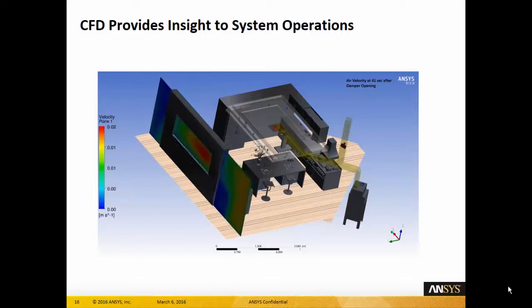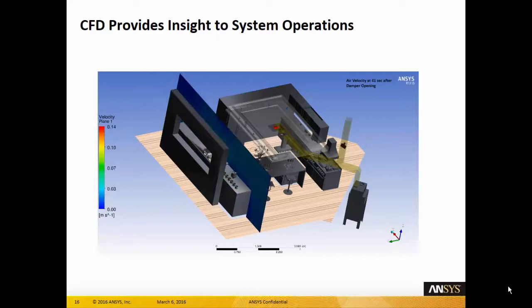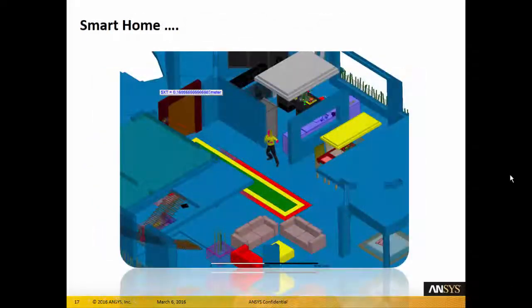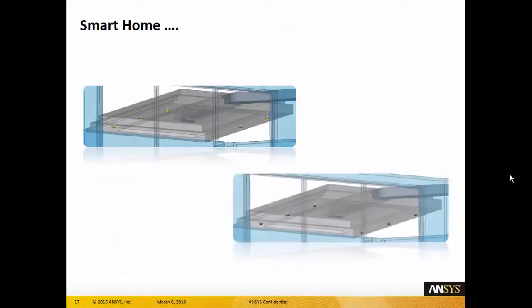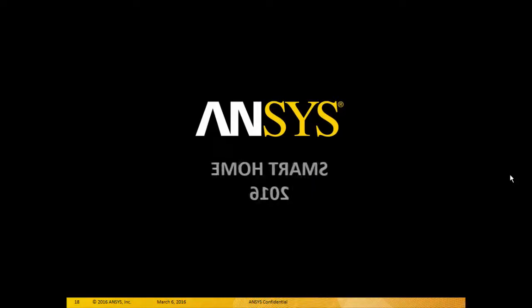The CFD model also provides details of airspeed at each location in the kitchen. This information can be used to modify the design and operational protocol of the smart home. Each and every smart device and control system can be designed using ANSYS tools. With ANSYS, you're fully prepared to design the smart home.